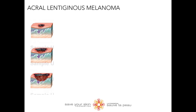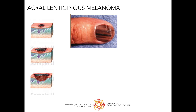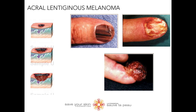Now let's look at acral lentiginous melanoma. It also spreads superficially before penetrating more deeply. However, it is quite different from the other types of melanoma, as it usually appears as a black or brown discoloration under the nails, or on the soles of the feet or palms of the hands. It may also appear as an open, unhealing wound. It is the most common type of melanoma in African Americans and Asians, and the least common among Caucasians.